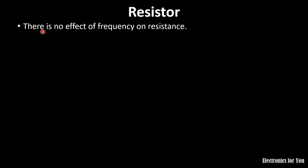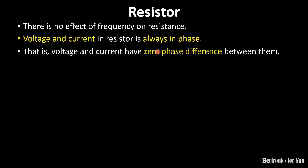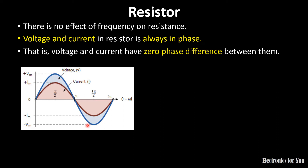In resistance, there is no effect of frequency on resistance, so the voltage and current are always in phase. It means there is no phase difference between voltage and current. Therefore the waveform for voltage and current will look like this — here is the current and here is the voltage. You can see that voltage and current are in phase, meaning they achieve their zero, maximum, and minimum values at the same interval of time. The phasor diagram will look like this.